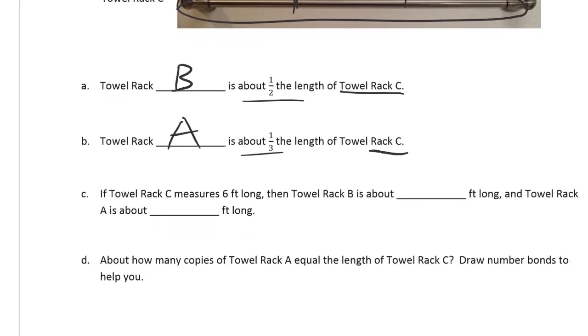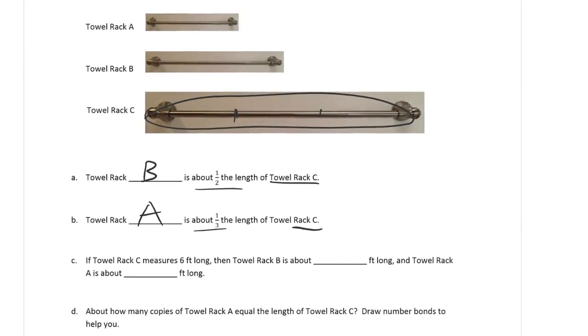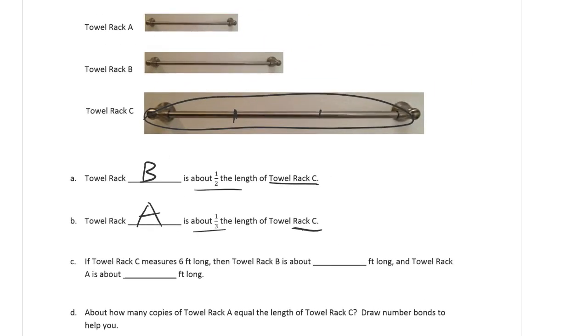All right, but there's more. We want to see the towel racks for all these questions here. If towel rack C measures six feet long, so if this is, that's six feet, then towel rack B is about, well, it's half, right?